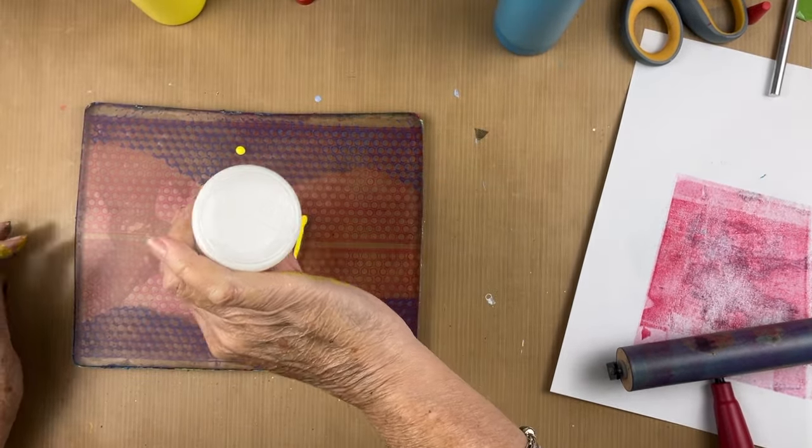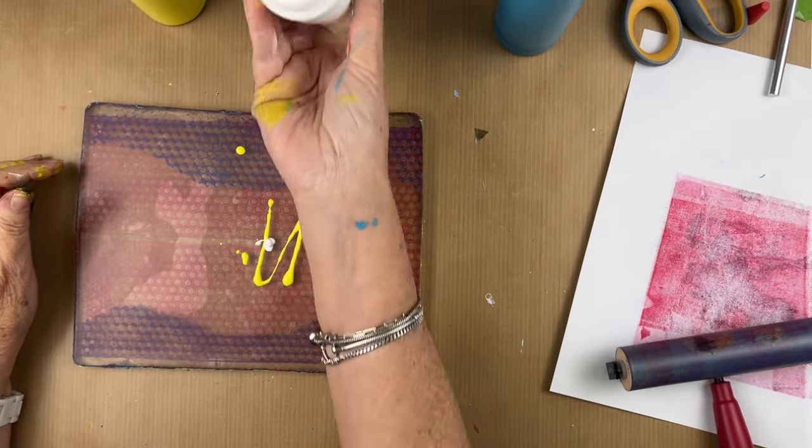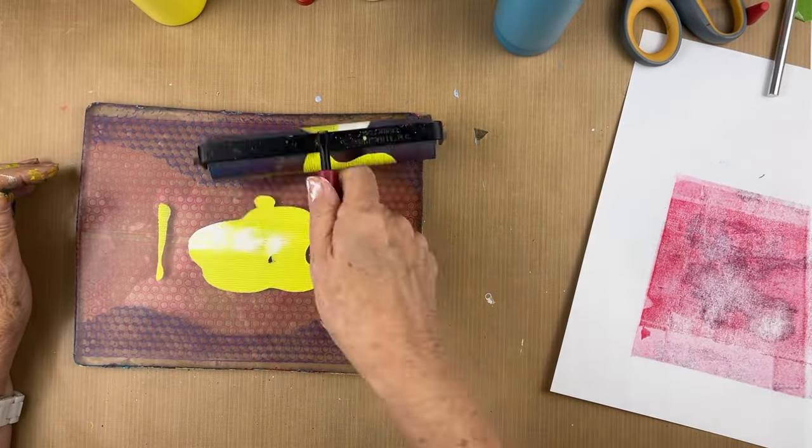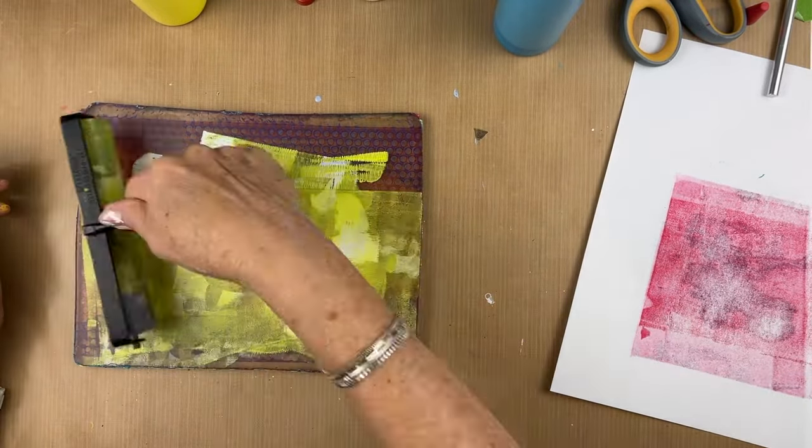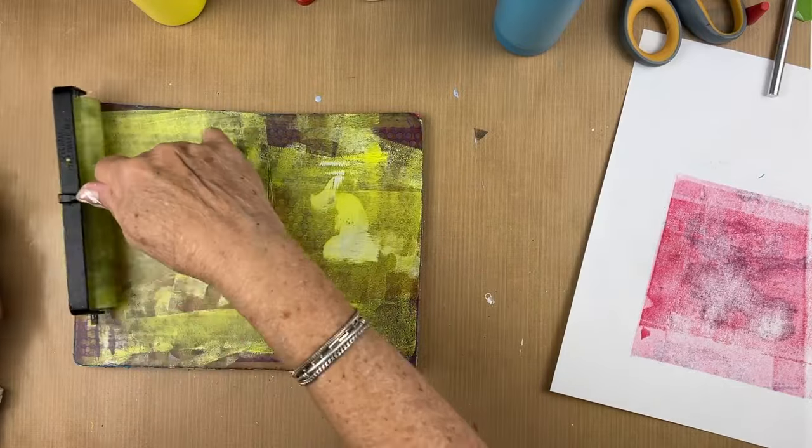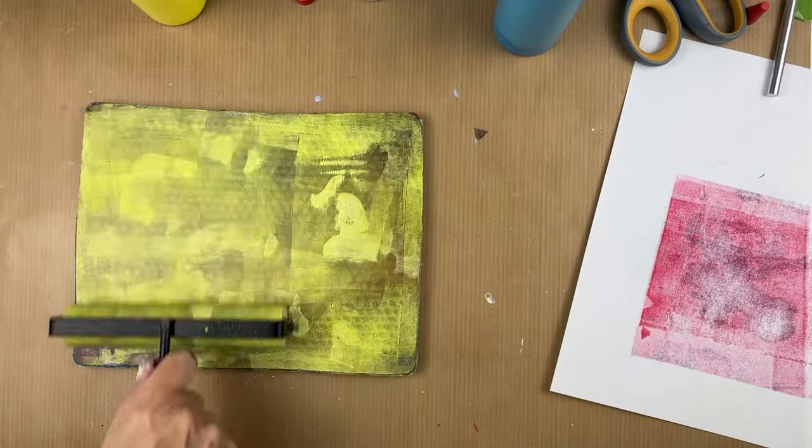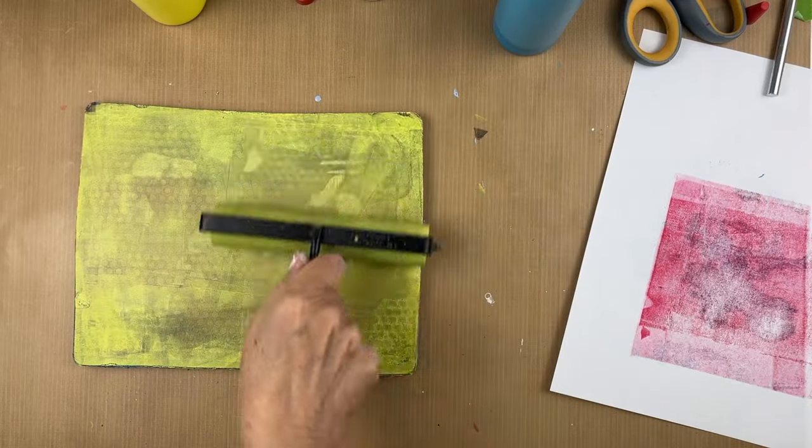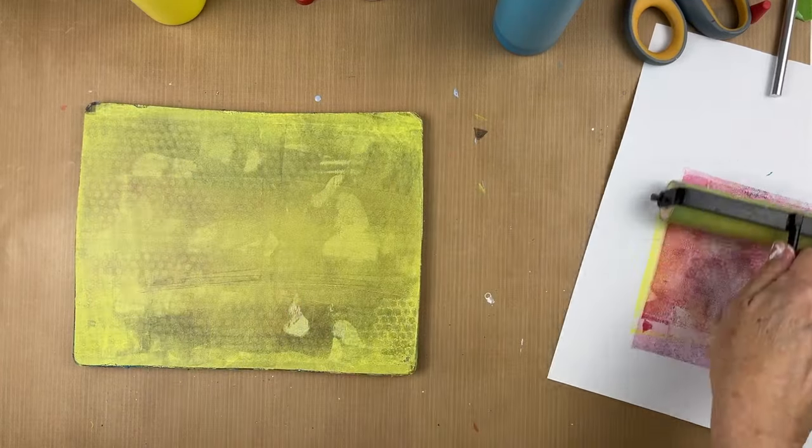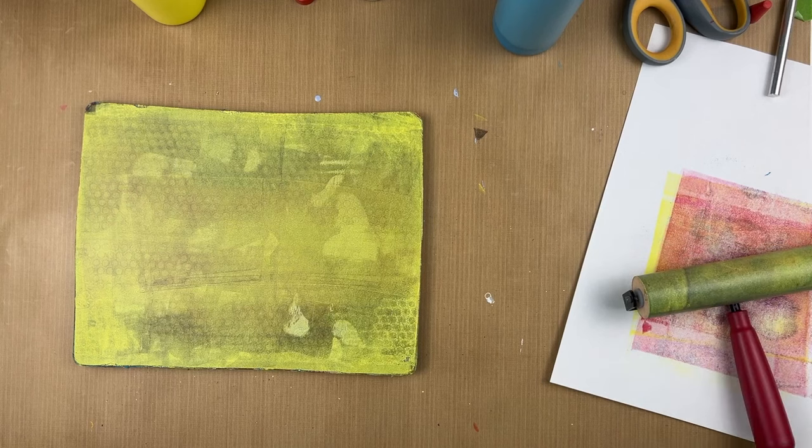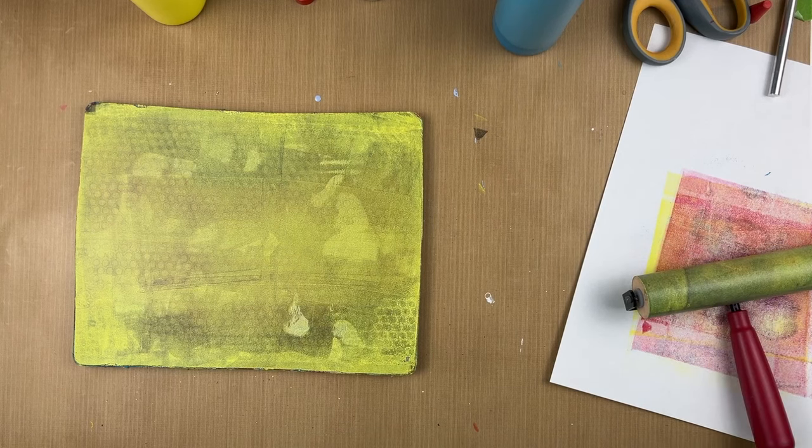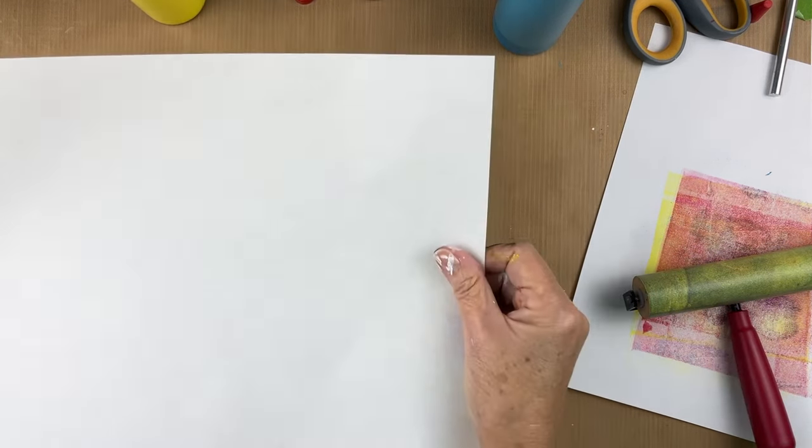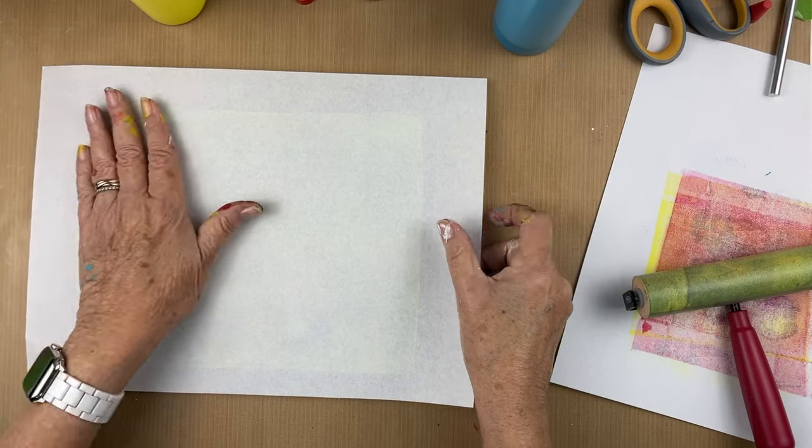Now I'm putting down Hansa yellow again with a little bit of white and not mixing it too well on purpose.